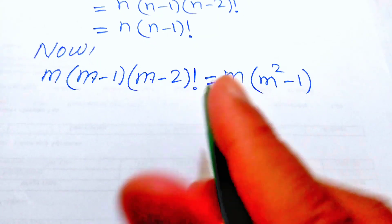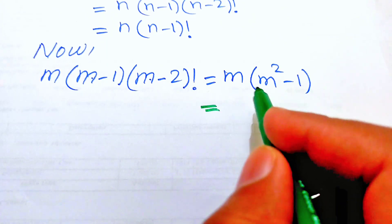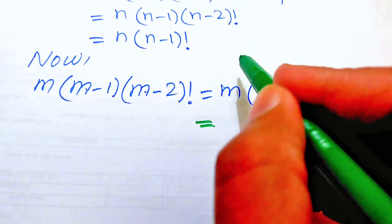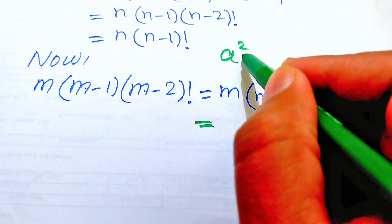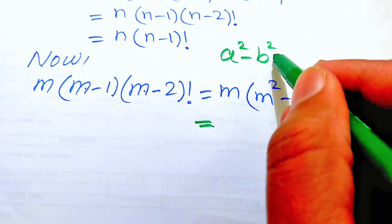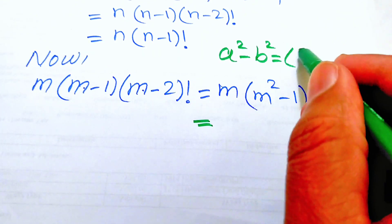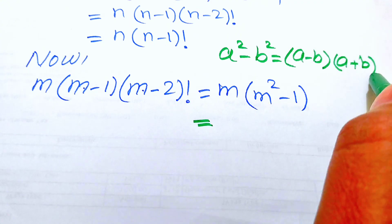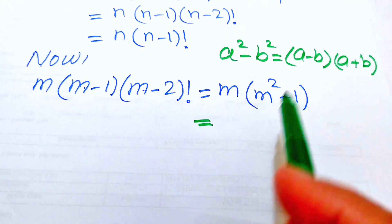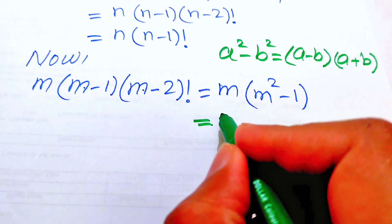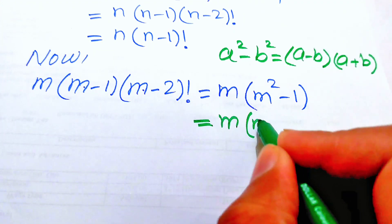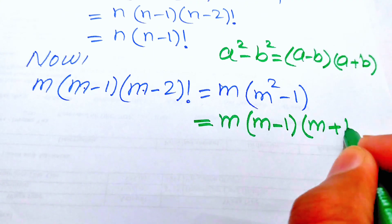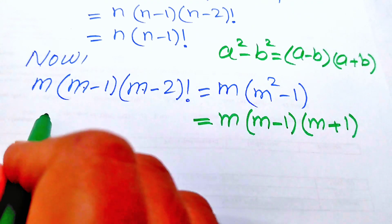On the right-hand side we apply a nice algebraic formula. We know that a squared minus b squared equals (a minus b)(a plus b). Applying this formula to (m squared minus 1) gives m times (m minus 1) times (m plus 1). On the left-hand side we have m times (m minus 1) times (m minus 2) factorial.